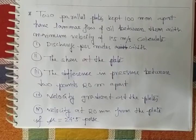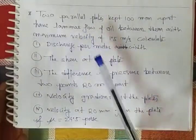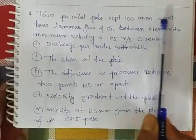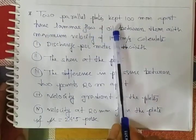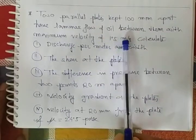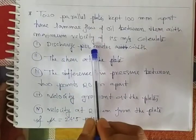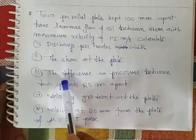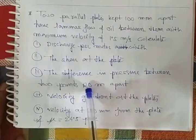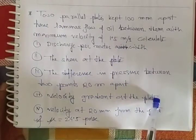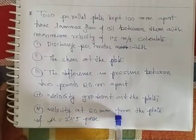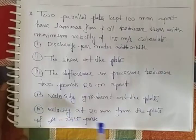Let's start one problem based on laminar flow between two parallel plates. Two parallel plates kept 100 mm apart have a laminar flow of oil between them with a maximum velocity of 1.5 meter per second. Calculate the discharge per meter, shear stress at the plate, difference in pressure between two points 20 meters apart, velocity gradient at the plate, and velocity at 20 mm from the plate if dynamic viscosity is 24.5 poise.